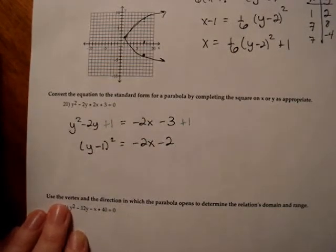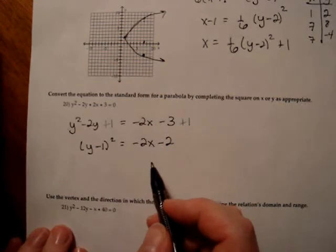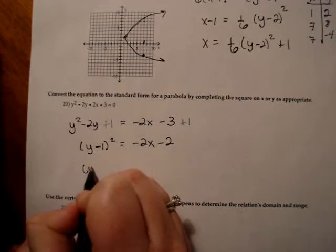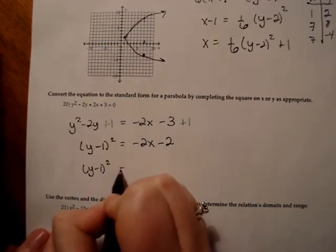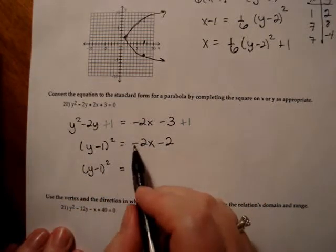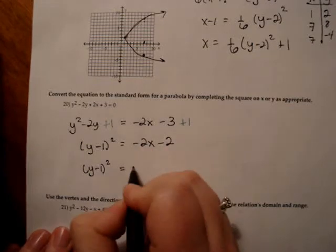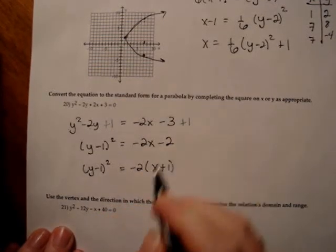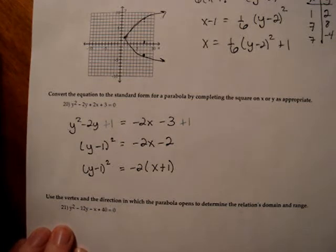Now what I'm going to do is make it look like what the book calls standard form. And that would be y minus 1 quantity squared is equal to, I factor out the coefficient on x, which would be negative 2. So that will leave me with negative 2 times x plus 1. That's the answer that you're going to see on the answer key for this handout.